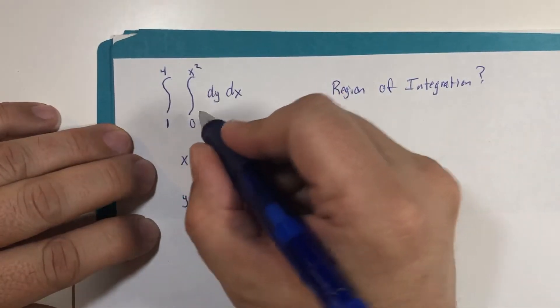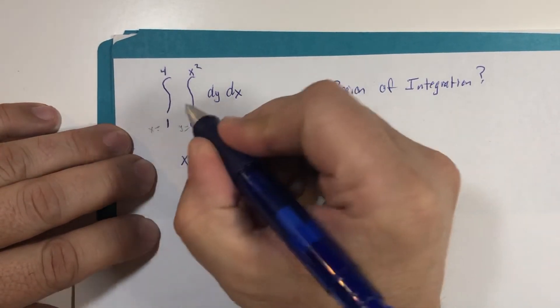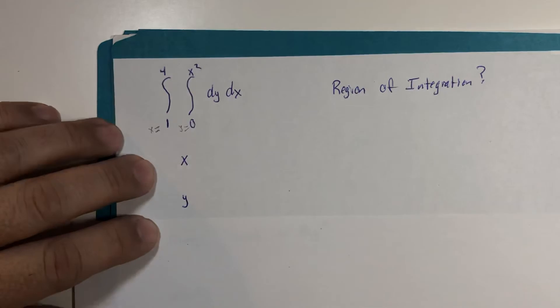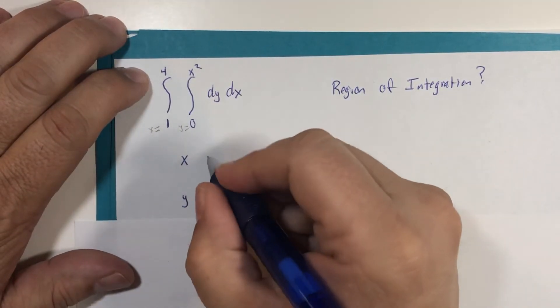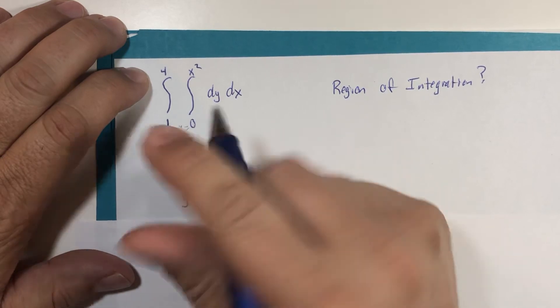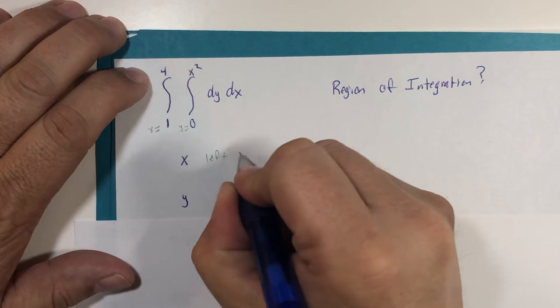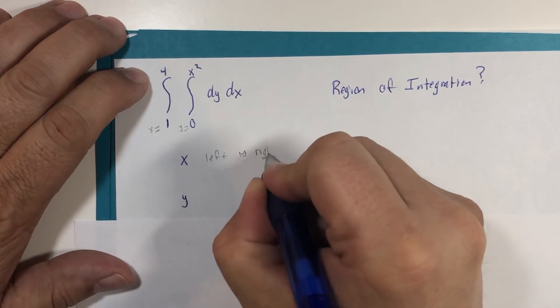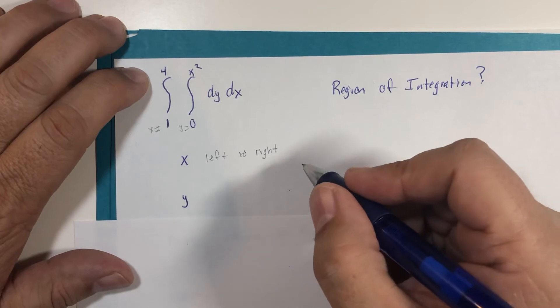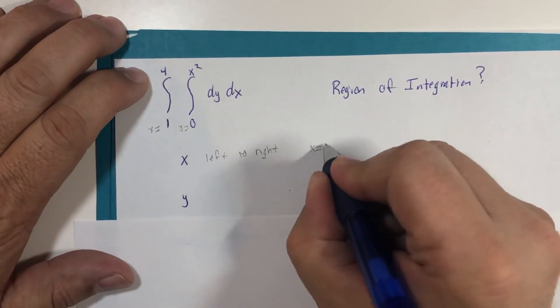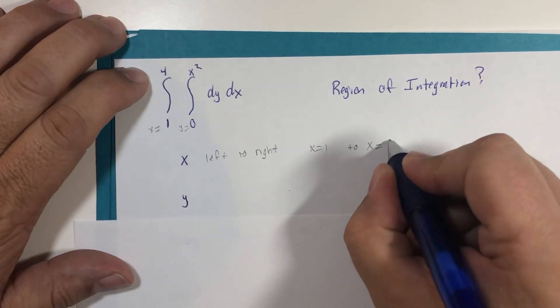The inside integral is a y equals and the outside integral is an x equals. And so those x boundaries we think of, we write the smaller one at the bottom and the bigger one at the top. So I'm going to call left to right because that's what x measures, and so that's x equals one to x equals four.